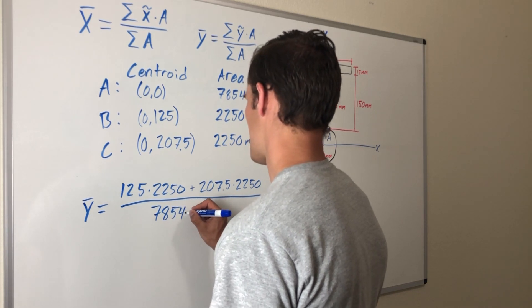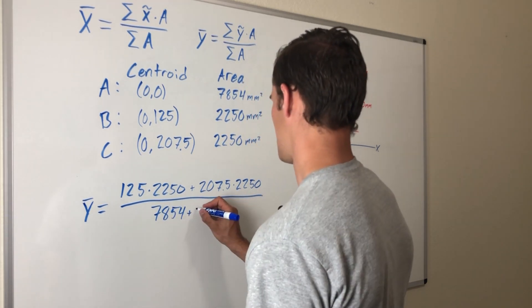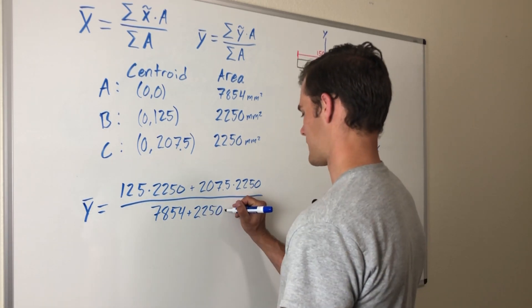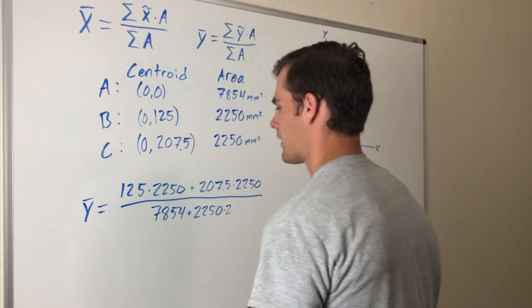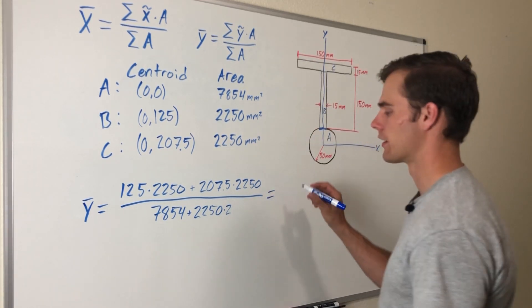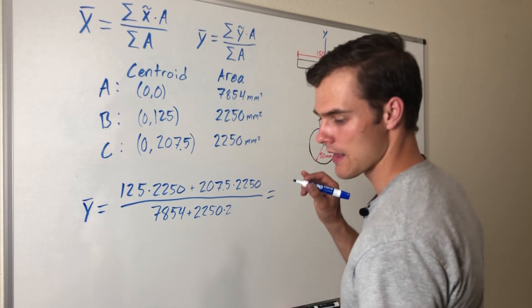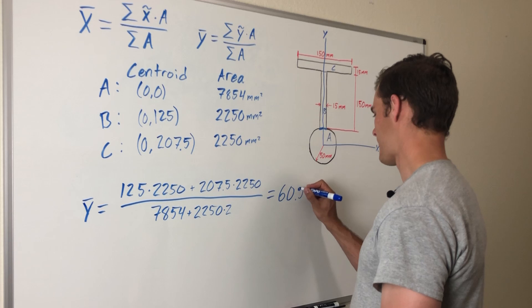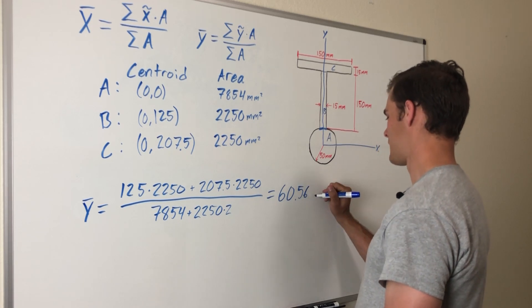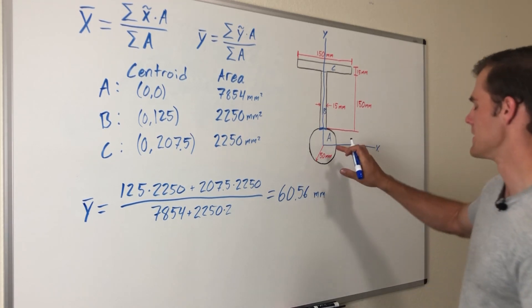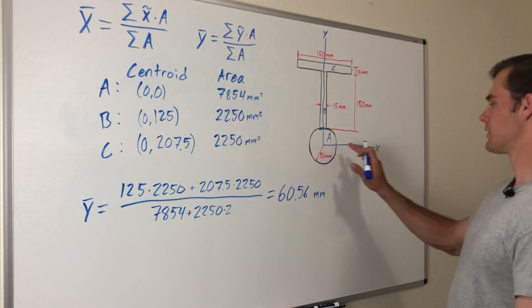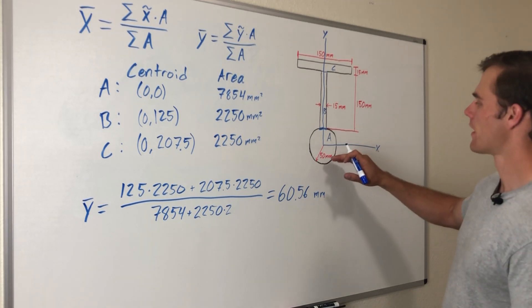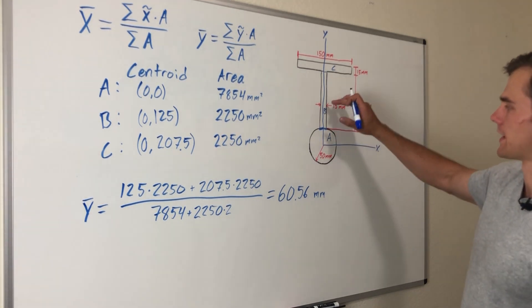So 7854 plus 2250 plus 2250 again, so I'm just going to multiply that by 2. Plugging that into your calculator, you end up getting that ȳ is 60.56 millimeters away from the center of this circle, because that's how we set up our coordinate system. 60.56 millimeters up above the center of that circle, somewhere around in this area.